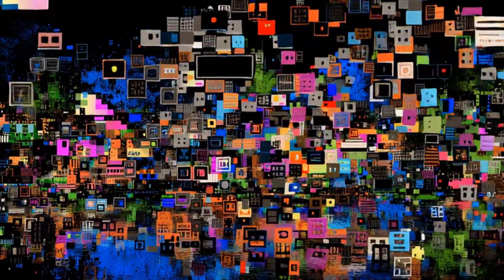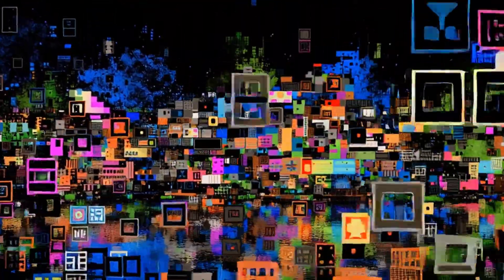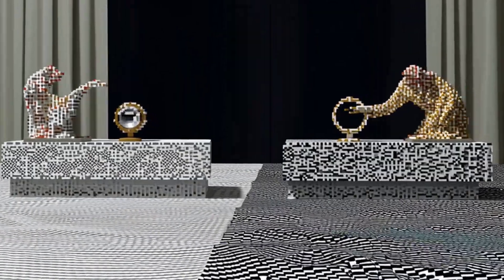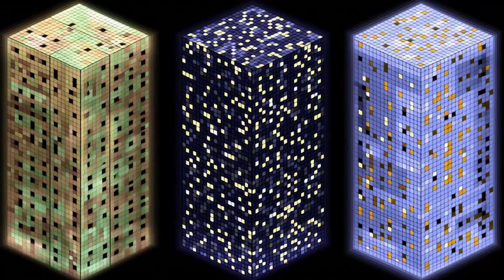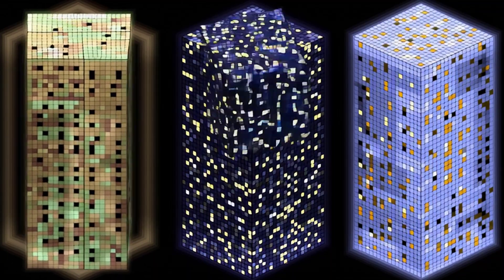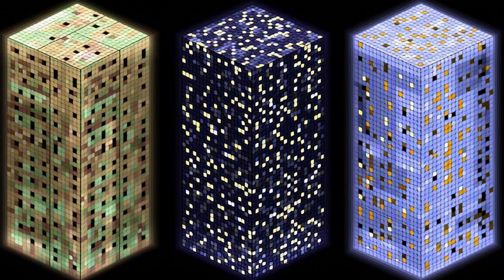Loop quantum gravity, for example, envisions space-time as woven from finite loops, while string theory suggests vibrating strings as the smallest units. If so, our sense of flowing time and smooth space may be an illusion that emerges only at large scales. Could it be that the universe is less like an unbroken canvas and more like a cosmic mosaic, its pixels too fine for us to see?